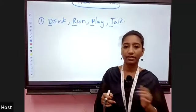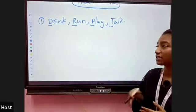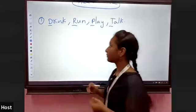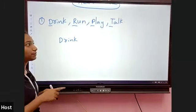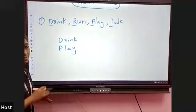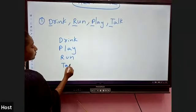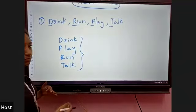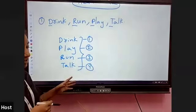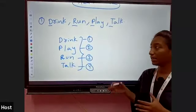Let us take the words: Drink, Run, Play, Talk. This is the model where the first letters are all different. We know alphabets are in order A to Z. The first letters are D, R, P, T. D comes first, so Drink is in first position. Then P comes before R and T, so Play is second. Then R comes before T, so Run is third. And Talk is in fourth position. Since the first letters are different, we can easily identify the order using only the first letter.